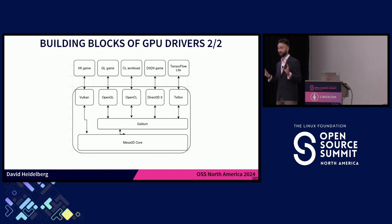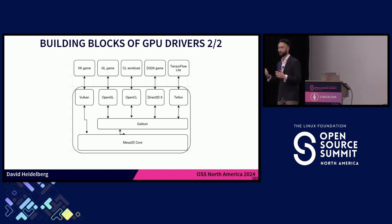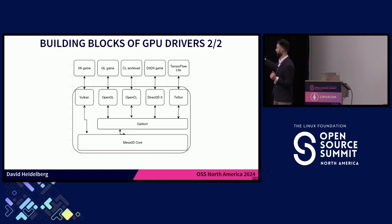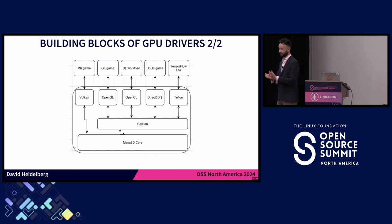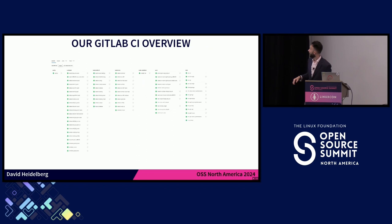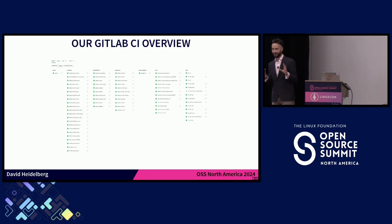The second diagram shows the internal function of Mesa. We have the driver itself with the core, then there is the Gallium framework which takes care of OpenGL, OpenCL, OpenCL direct, for example, and Teflon for TensorFlow, and also some other stuff. There is also the Vulkan part — that's not the Gallium part; Gallium only covers those standards. But Mesa as a whole takes care of Vulkan and everything. We're working with GitLab.